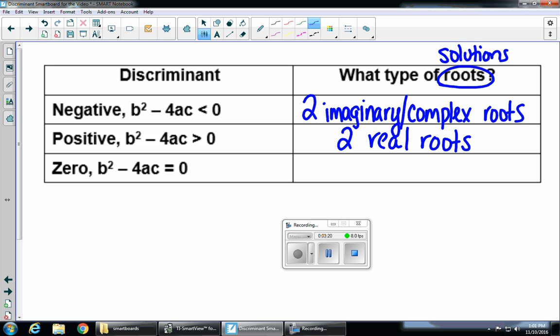And if you find the discriminant and it's equal to zero, it means you will have one distinct real root. So, these are three cases. Negative means it's imaginary, and there's two of them. Positive means it's real, and there's two of them. Or zero means that there's one distinct real root.